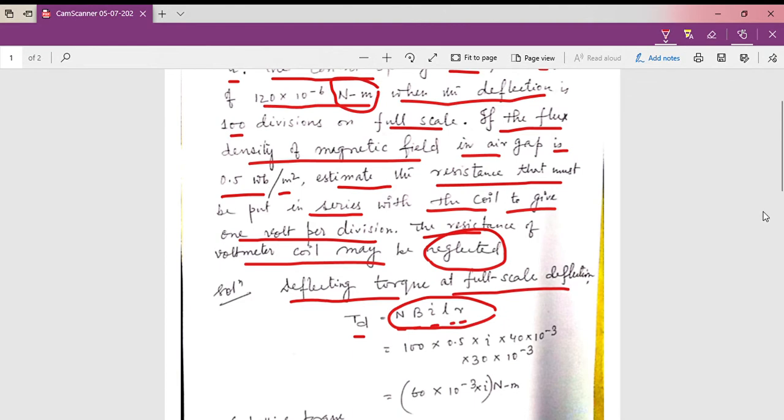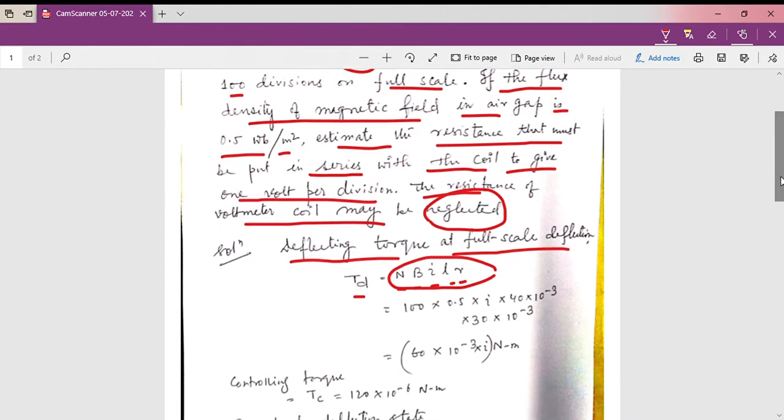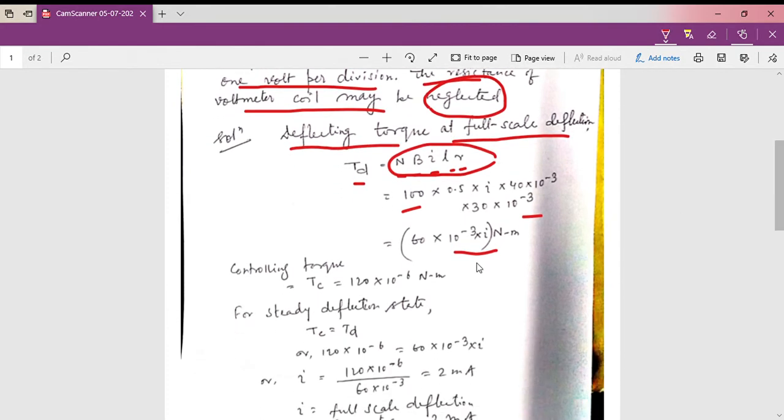According to the given parameters, we have to replace N, B, L, and R. We can't replace I here because I is unknown at this stage. So it will be 66 into 10 to the power minus 3 into I Newton meter.